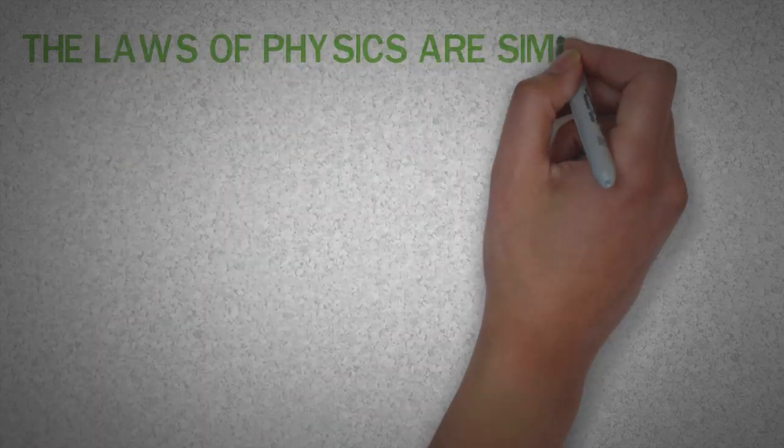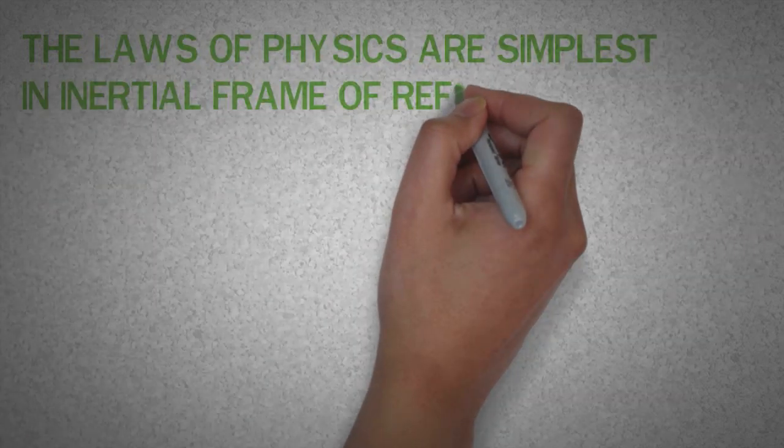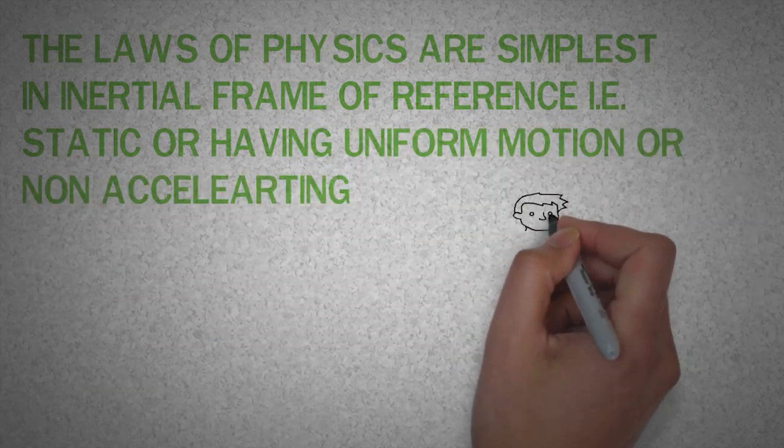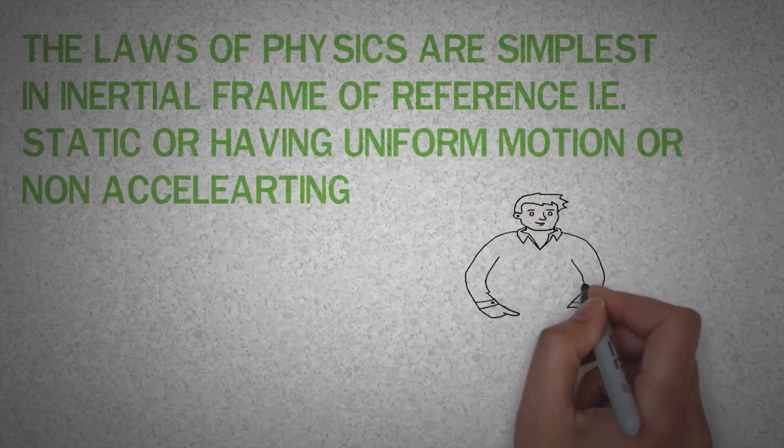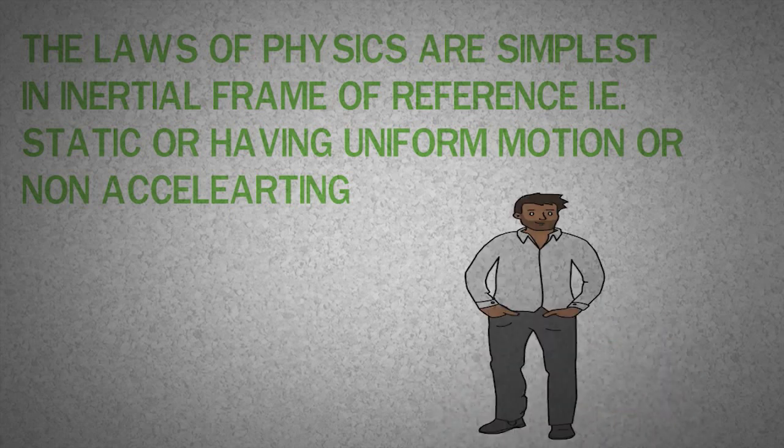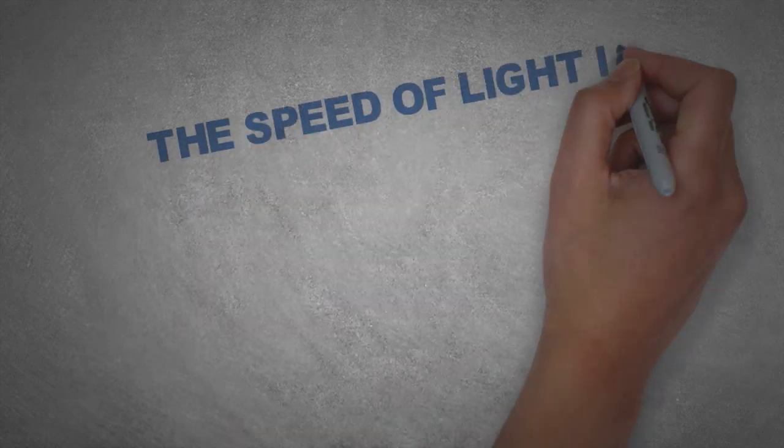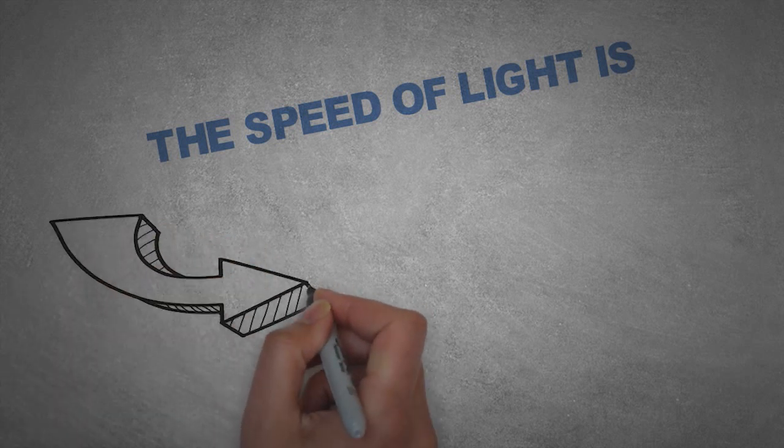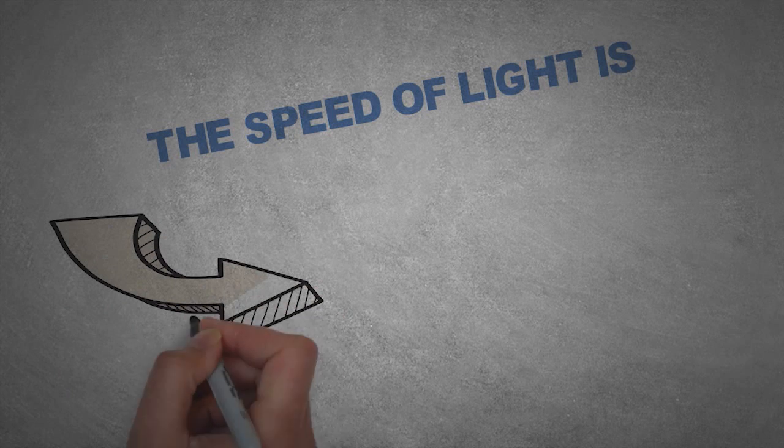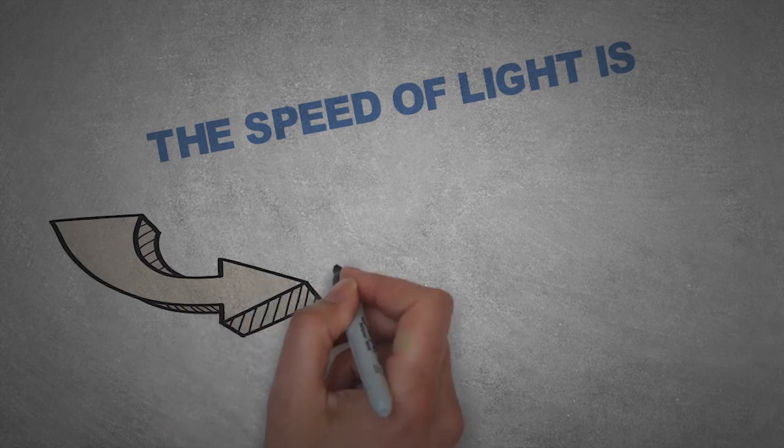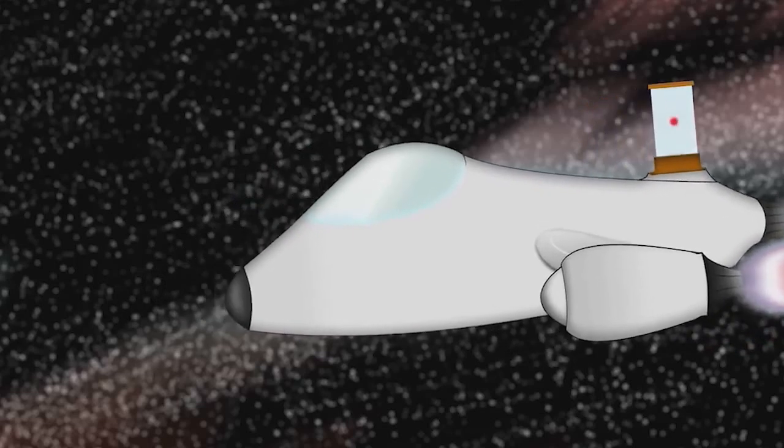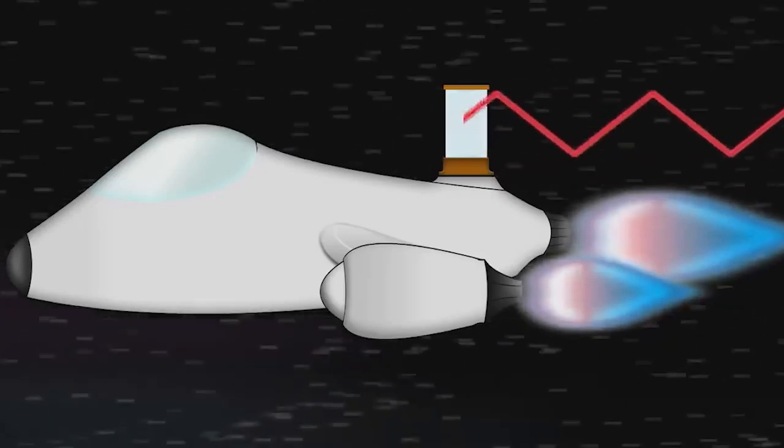So till now, we have concluded that the laws of physics are simplest in inertial frames of reference, that is static or having uniform motion, or simply non-accelerating. Now I would like to discuss the speed of light. The speed of light is 299,792,458 meters per second, which is considered to be the universal speed limit. Nothing in this universe having positive mass can travel faster than the speed of light.